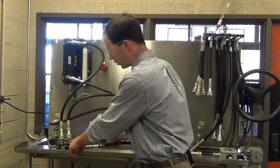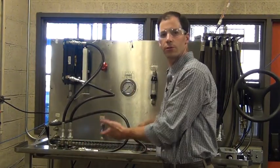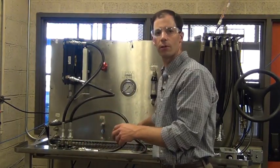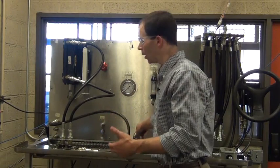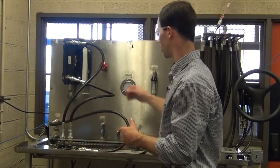The tank port of the directional control valve goes back here to my return, which then goes through a filter and back to the reservoir of the hydraulic power supply. Now I'm going to run this and we'll look at how the cylinder moves as I actuate the directional control valve.